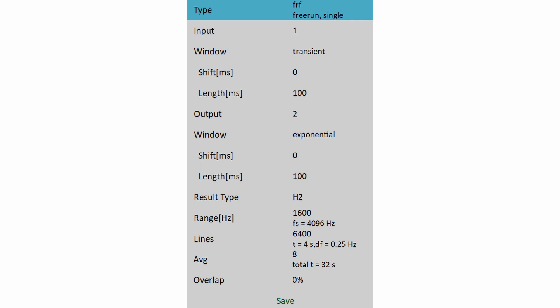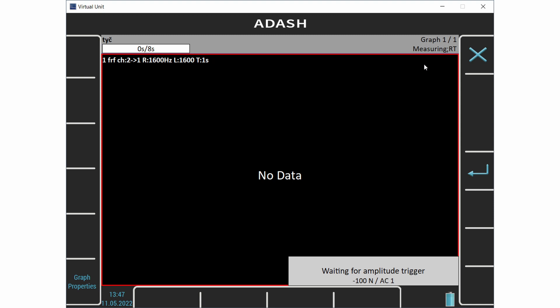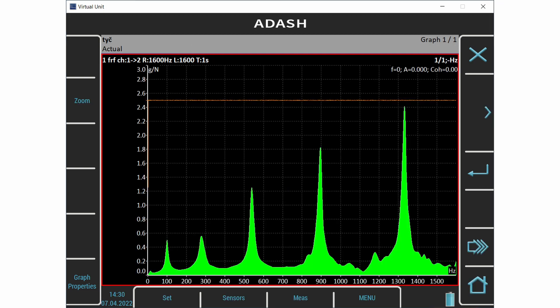This is example of FRF setup. I start the measurement. The window waiting for trigger appears. Now I hit the beam. The initial graph of response appears. But it is preview because we must set the windows accurately.